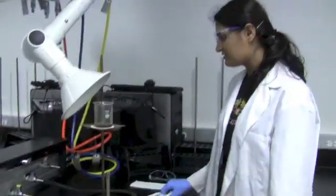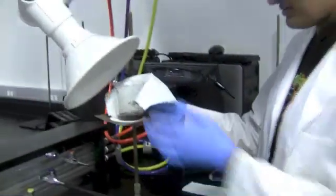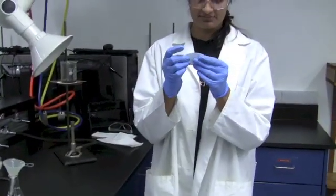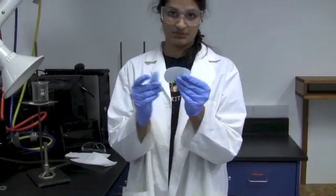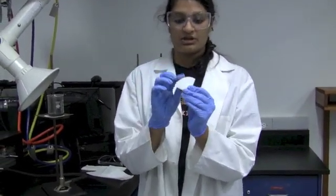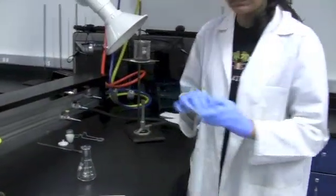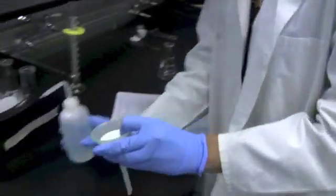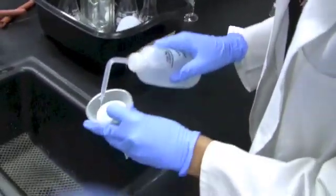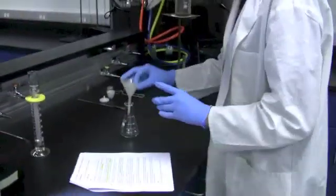Now once your aluminum dissolves, you might have some black particles remaining. They're going to look like this. To get rid of these, you're going to want to filter them out. Now you're going to take some filter paper, you're going to fold it in half, and fold it in half once again to form a cone shape. You're going to open the filter paper and place it inside your funnel. And to get the paper to stick to the funnel, you're going to take your wash bottle and just lightly wet the edges.